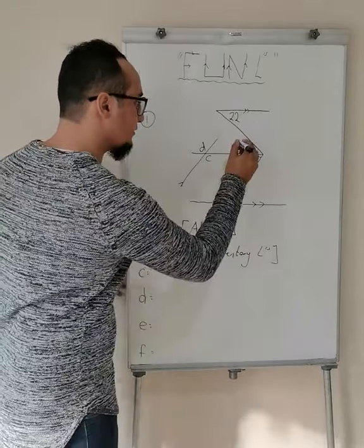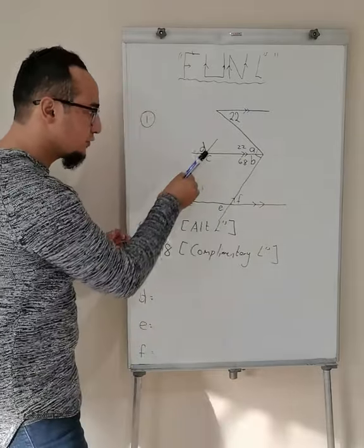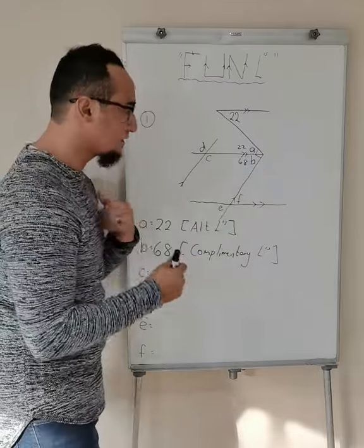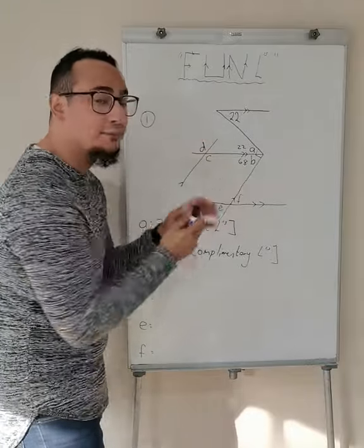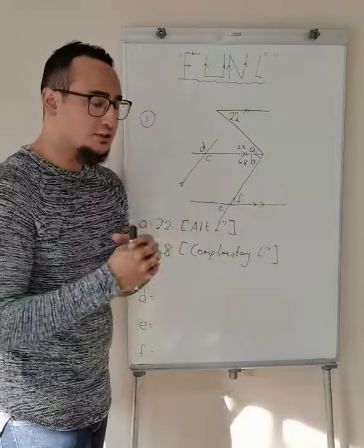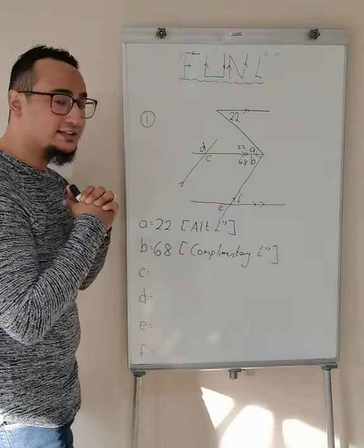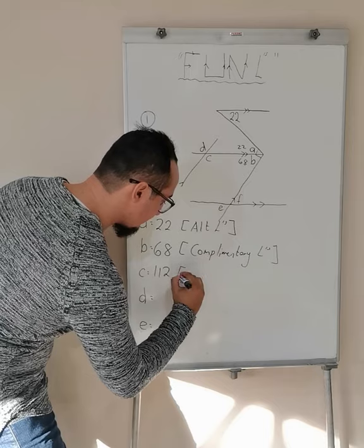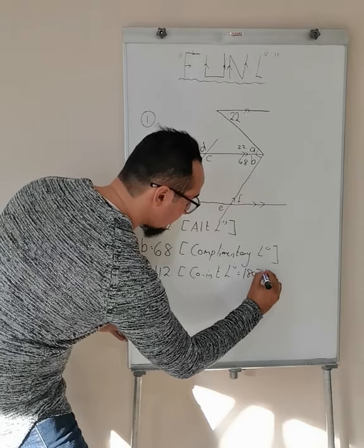So A is 22 and B is equal to 68. What about C? Note those lines are parallel and I have my transversal. What letter does that make? An upside-down U, meaning that the two angles are inside of my parallel lines. Inside means interior, two means co — so co-interior angles add up to 180 degrees. Therefore, 180 minus 68 is 112 degrees. Co-interior angles equal 180 degrees.